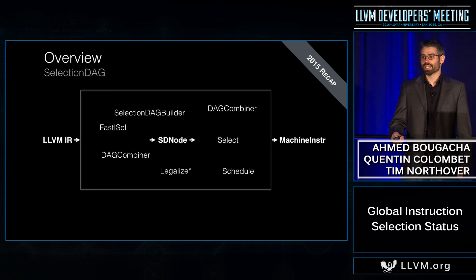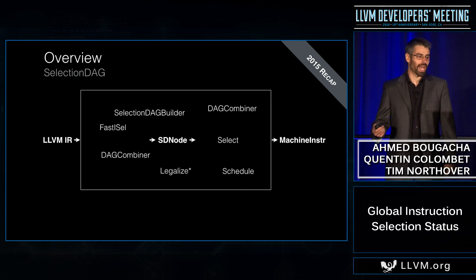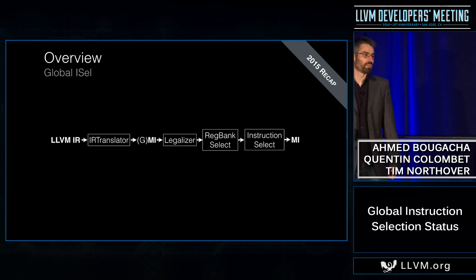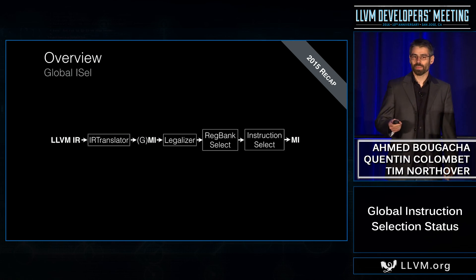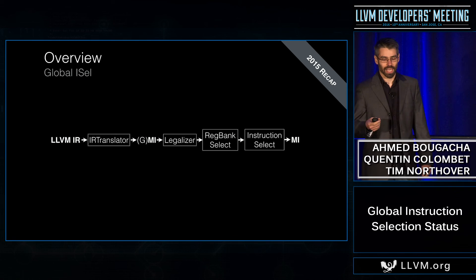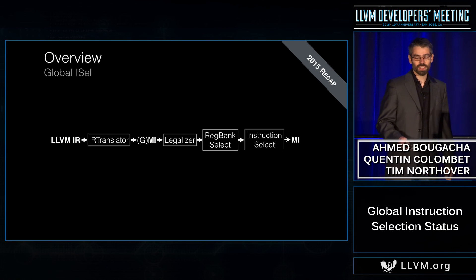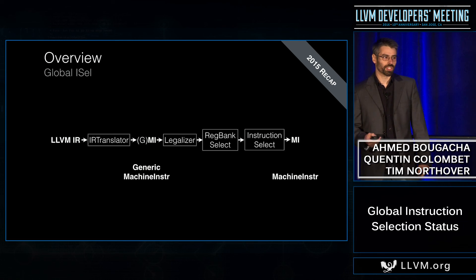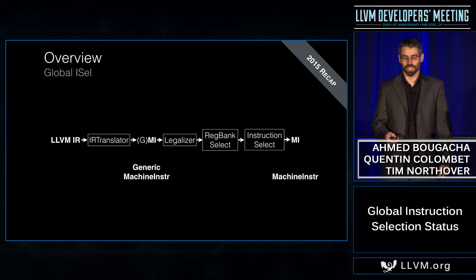With GlobalISel, we wanted to break that complexity. Basically, we broke down the pipeline into different passes, where each pass is responsible for what was done in individual phases in SelectionDAG. This is possible thanks to an extension of machine instructions that we call generic machine instructions, or GMI, which I will detail in a minute.